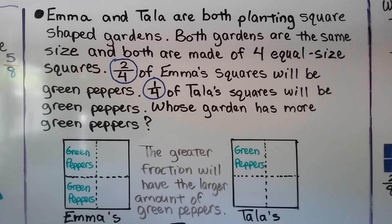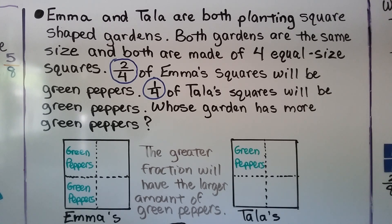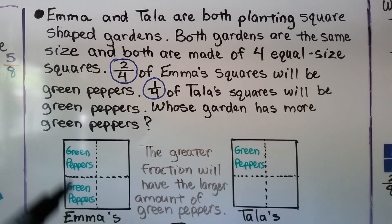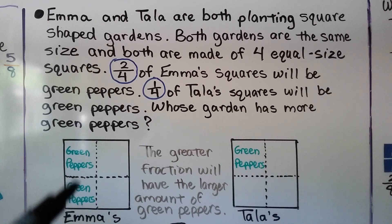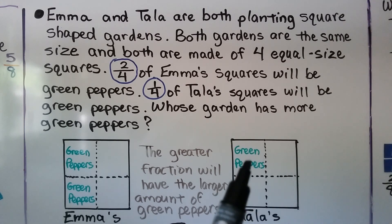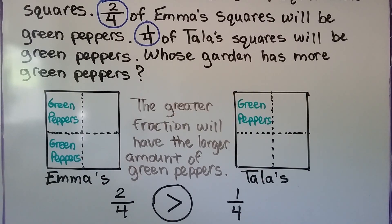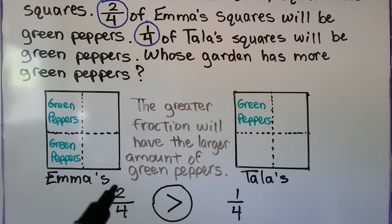Emma and Tala are both planting square-shaped gardens. Both gardens are the same size and both are made of 4 equal-size squares. 2 fourths of Emma's squares will be green peppers — so that's 2 of the 4 squares. And 1 fourth of Tala's squares will be green peppers — so that's only 1 of the 4. Emma's has 2 of the 4 squares as green peppers, so that's 2 fourths.